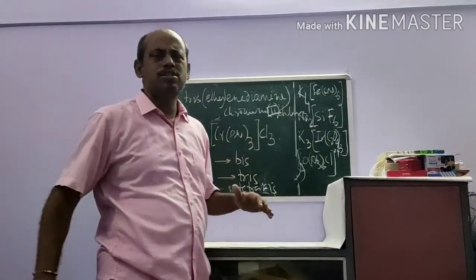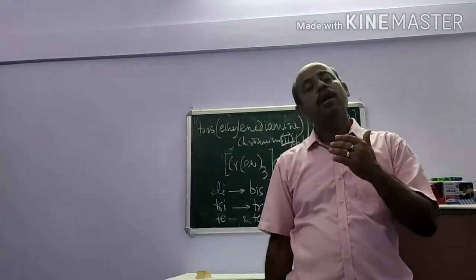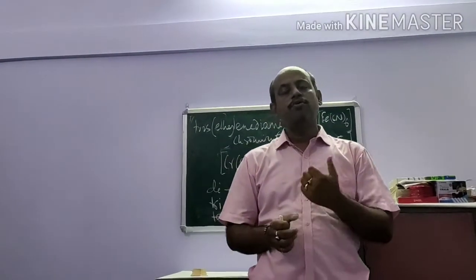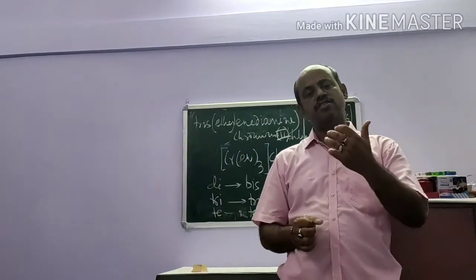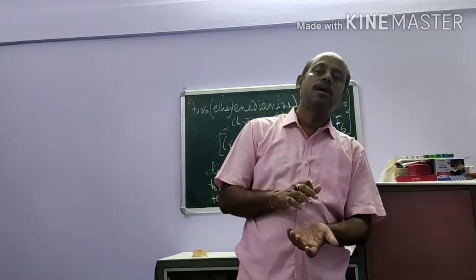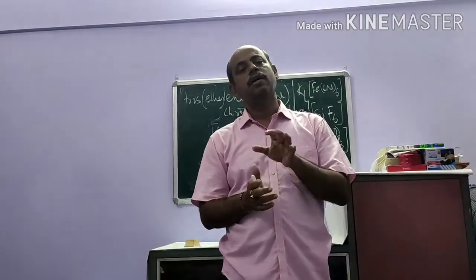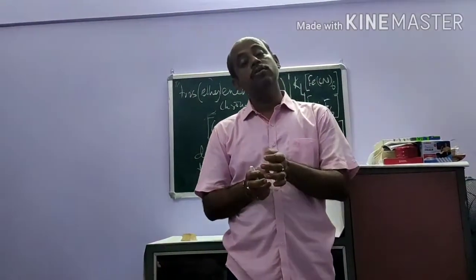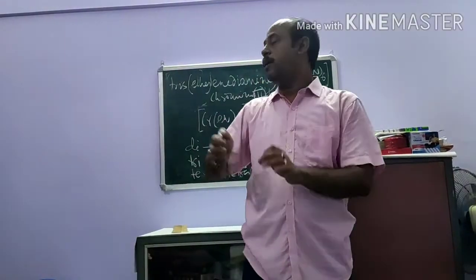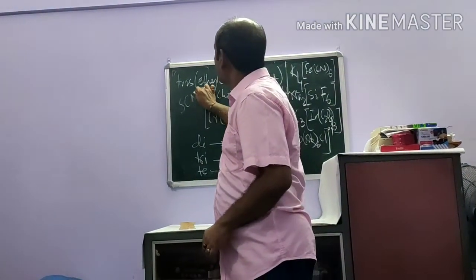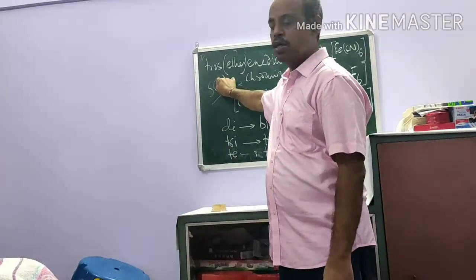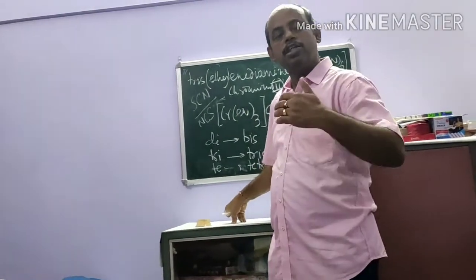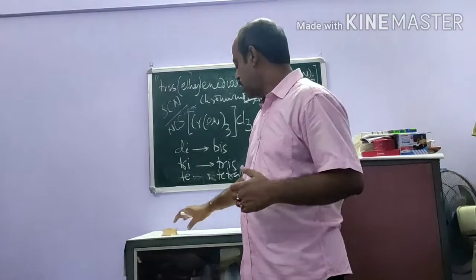For ambidentate ligands, naming depends on which atom is bonded. For CN: if bonded through C it is cyano; if bonded through N it is isocyano. For NO2: if bonded through N it is nitro-N; if bonded through O (ONO) it is nitrito-O. Similarly for SCN: if bonded through S it is thiocyanato-S; if bonded through N (NCS) it is thiocyanato-N.